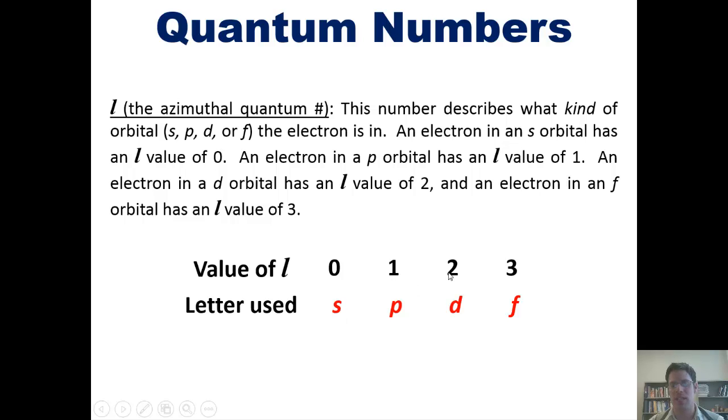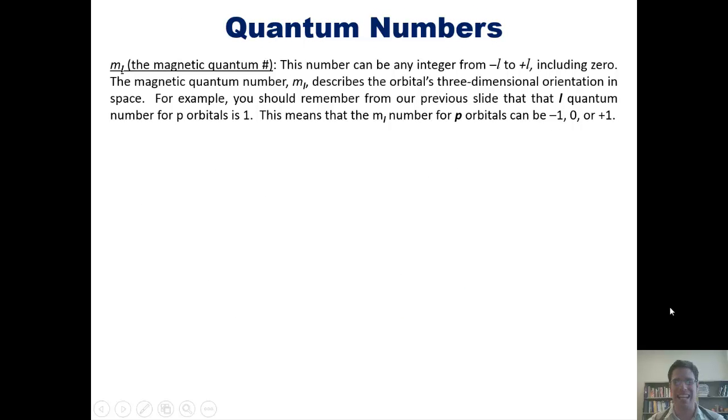the orbital you're talking about is a p. If it's a 2, the orbital you're talking about is a d. And if it's a 3, then the orbital you're talking about is an f. The next quantum number is the m sub L, or magnetic quantum number. This number can be any integer from negative L to positive L, including 0. The magnetic quantum number, m sub L, describes the orbital's three-dimensional orientation in space.